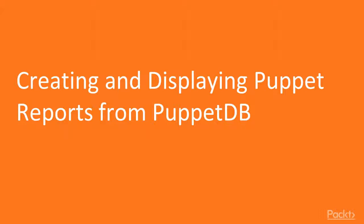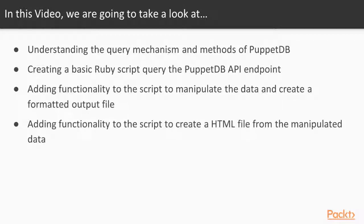In this video, we will learn about creating Puppet reports from PuppetDB. We will first understand the various endpoints of PuppetDB and how to access them and make queries to get our data. We will then create a basic Ruby script and add some logic to connect to the PuppetDB endpoints and get the required data. Next, we will add more logic to get specific data and create a formatted output file, and finally add logic to also create an HTML file so the fetched data can be viewed in a tabular format.